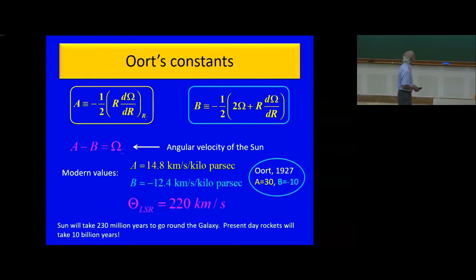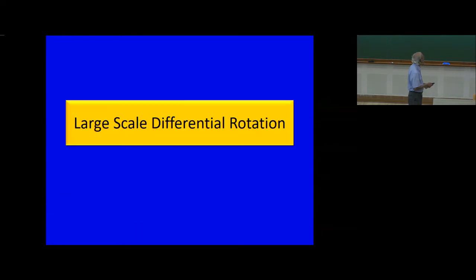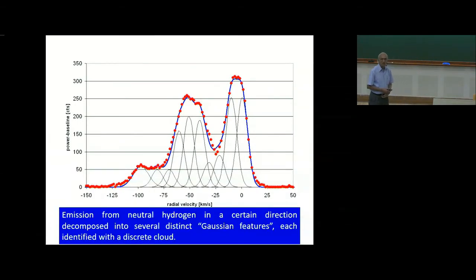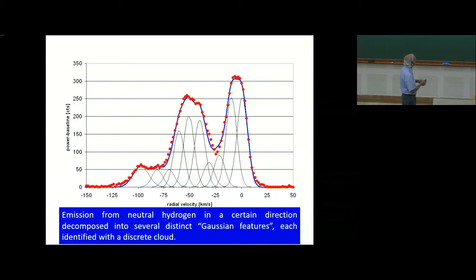Let us go from our local neighborhood to large-scale differential rotation. Any determination of the large-scale differential rotation had to wait until the discovery of the hyperfine 21 centimeter radiation from the hydrogen atom. How do we model the rotation of the galaxy using the 21 centimeter radiation?